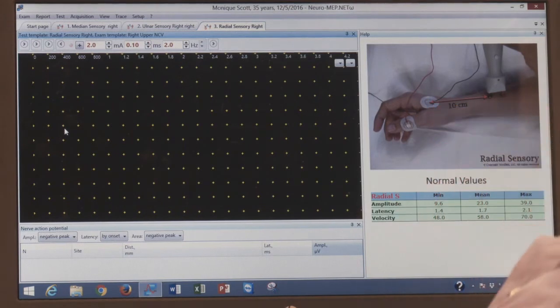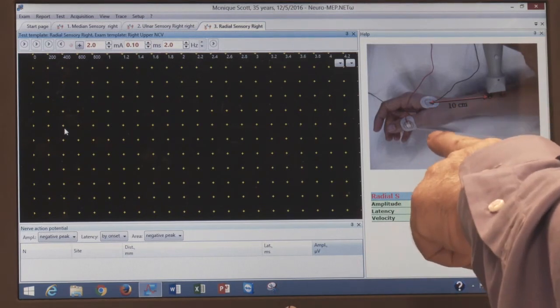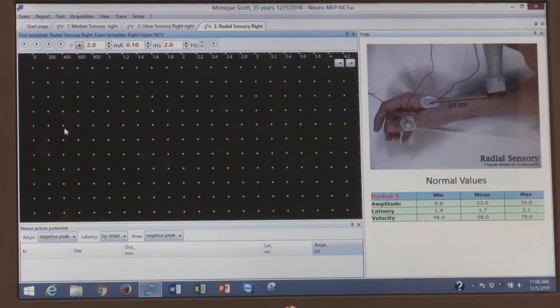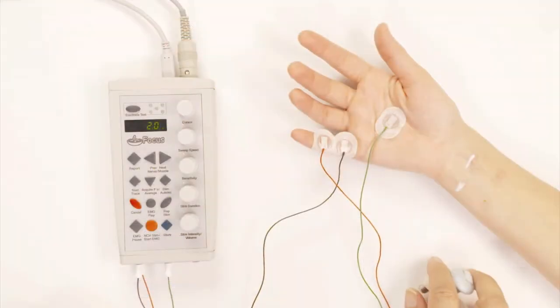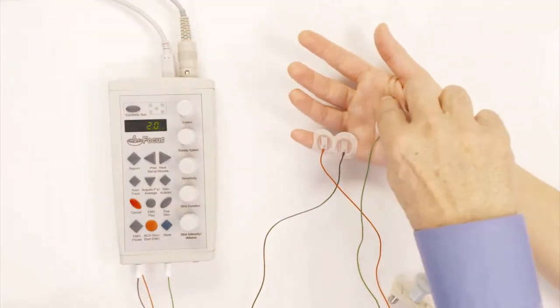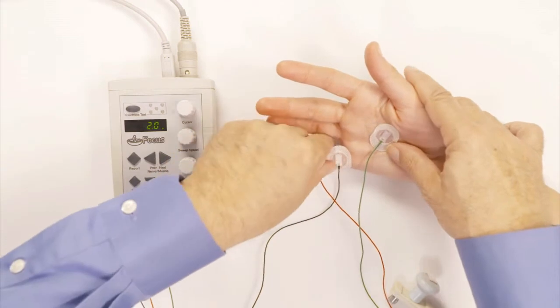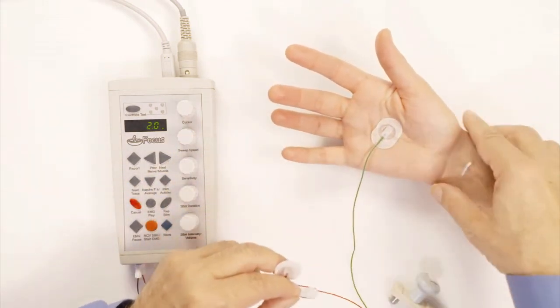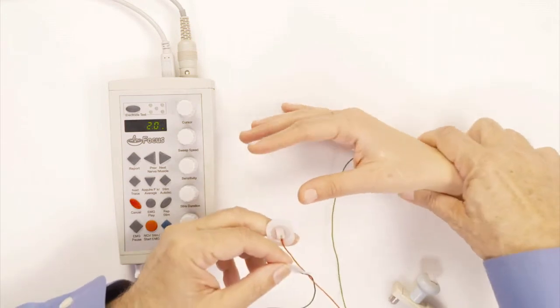I will put the black electrode right between the index finger and the thumb, with the reference electrode, the red one, on the thumb. I'm going to take these electrodes off and ask her to turn her hand like this so that I can put these electrodes on.